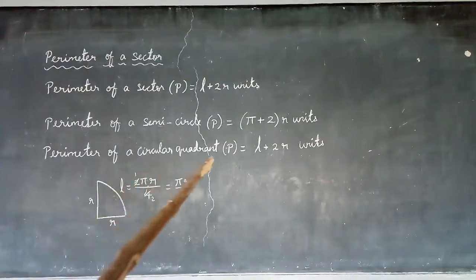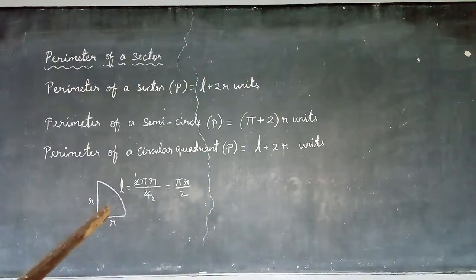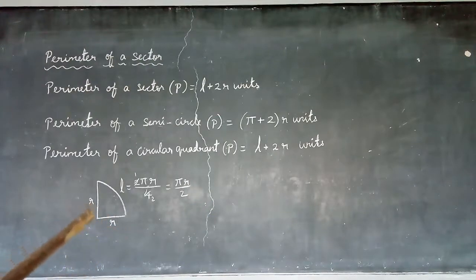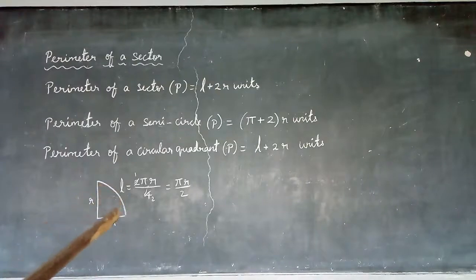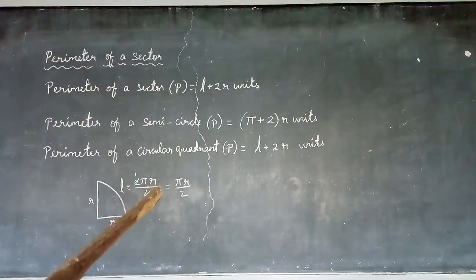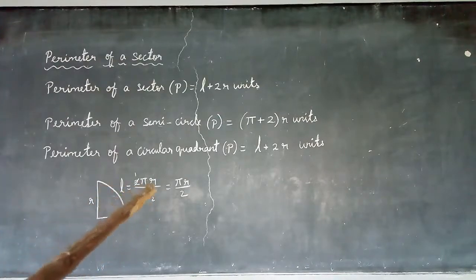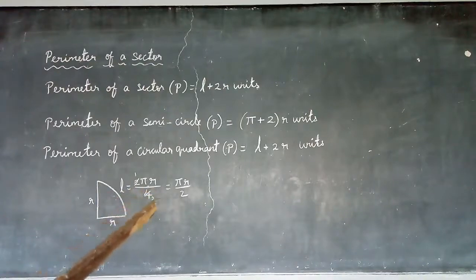Now, the perimeter of a circular quadrant — a quadrant is a quarter of a circle. It has two radii and an arc. The length of the arc is one quarter of the circumference of the circle. Circumference equals 2πR, so dividing by 4 gives arc length equal to 2πR divided by 4, which simplifies to πR by 2.